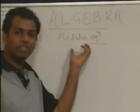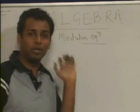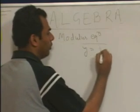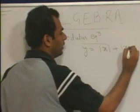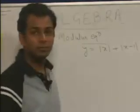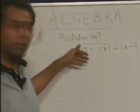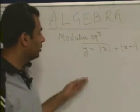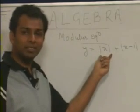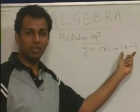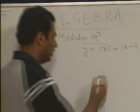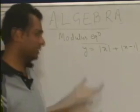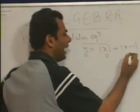Now, if we are discussing modulus equations, we can also find the maxima and minima. For example, if y = |x| + |x - 1|, and we are supposed to find the maximum or minimum value of y — we have already discussed how to plot the graph of |x| and individually |x - 1|. Here these two functions have been added. The simplest way is to identify the critical points, which are 0 and 1.